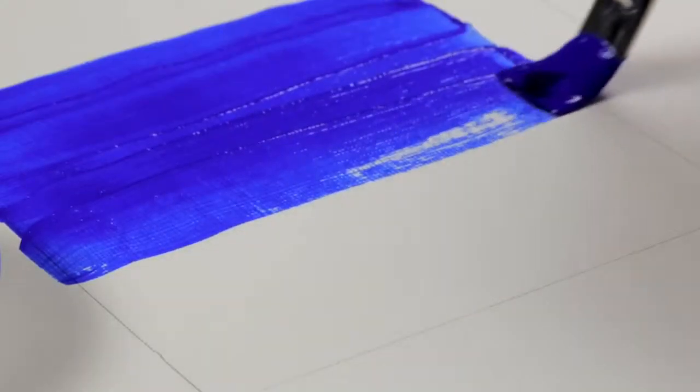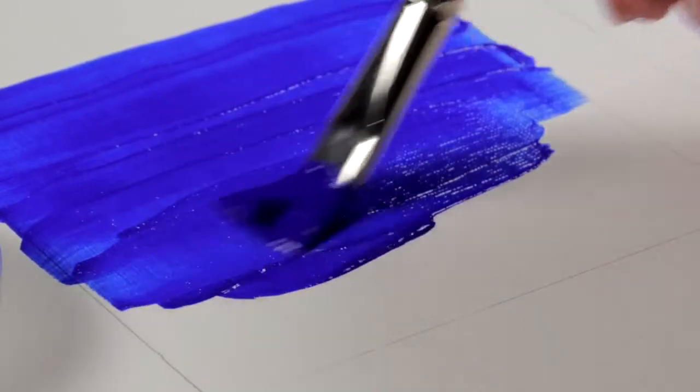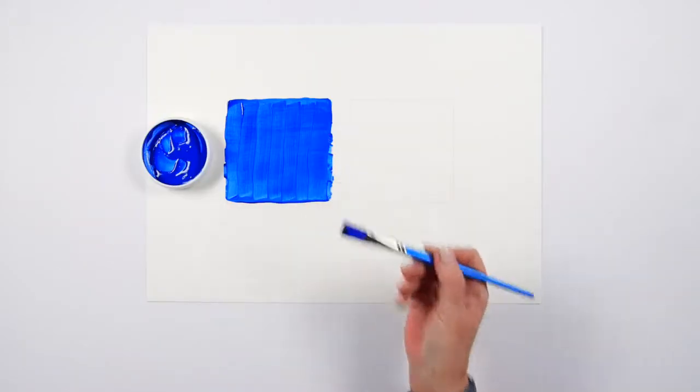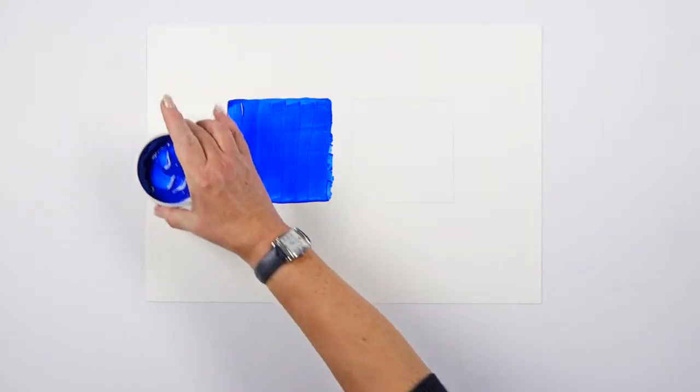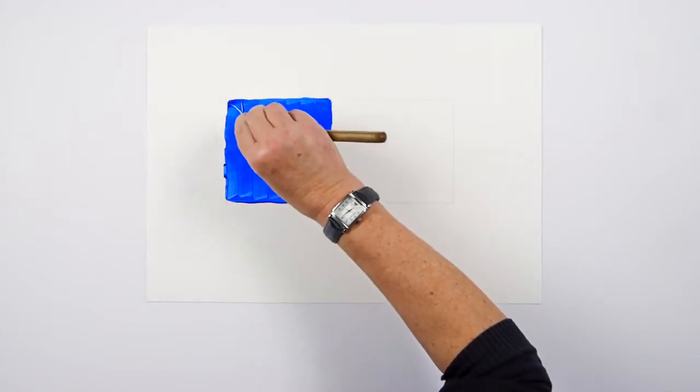For the first part of the test I'm going to paint this square with five parts Winsor & Newton professional artist acrylic ultramarine and one part water. I'm now going to quickly scratch 16 crosses onto the wet paint.